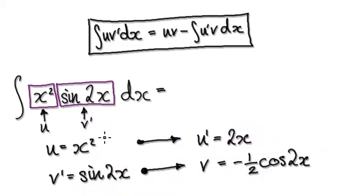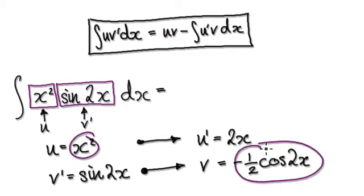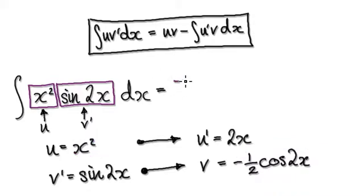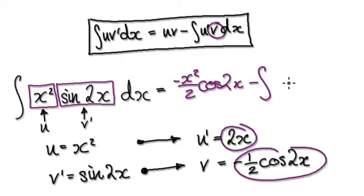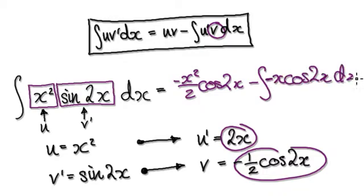So now blindly follow this. The formula says get u times v, so that would be negative x squared over 2 cos 2x. And then you've got your minus here, minus the integral of u prime times v, so that would be minus x cos 2x dx. And you've got a minus and a minus, so that makes it a positive.